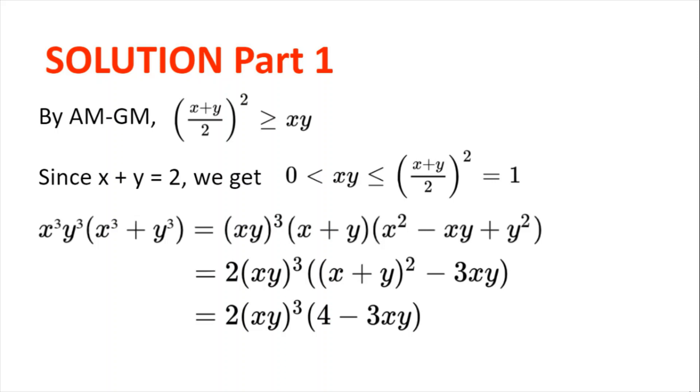Now, we can rewrite the left hand side of the inequality given: x³y³(x³ + y³), as (xy)³ multiplied by (x + y) multiplied by (x² - xy + y²).